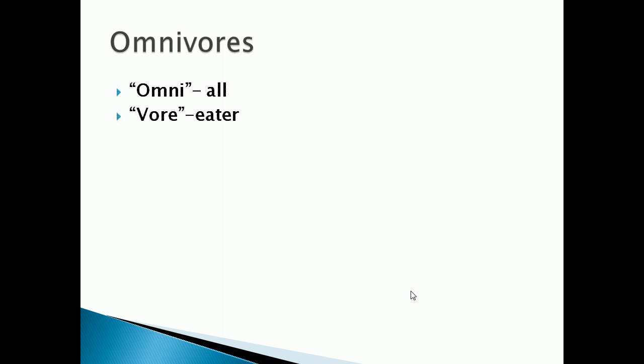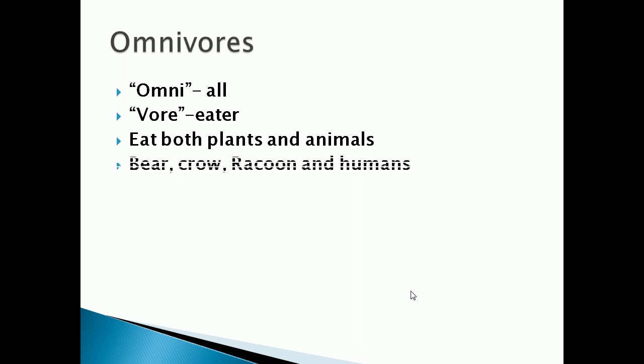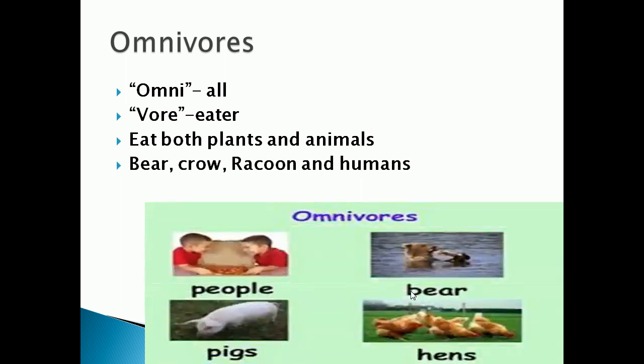Here you can see about omnivorous. Omnivorous means 'all eater' and they eat both plants and animals. Examples of omnivorous are bear, crow, dragon, and humans. In this picture you can see omnivorous animals: people, bear, pigs, and hens.